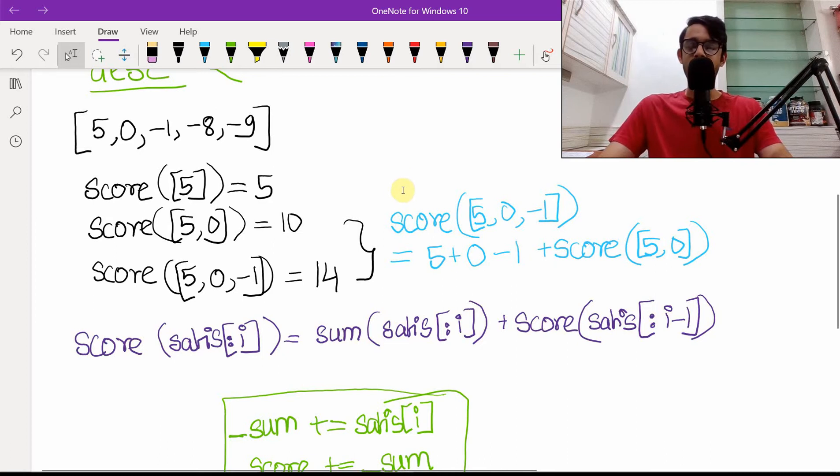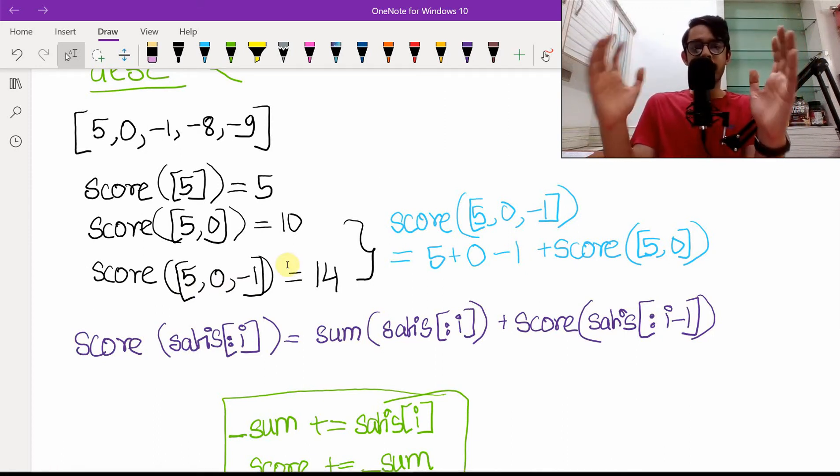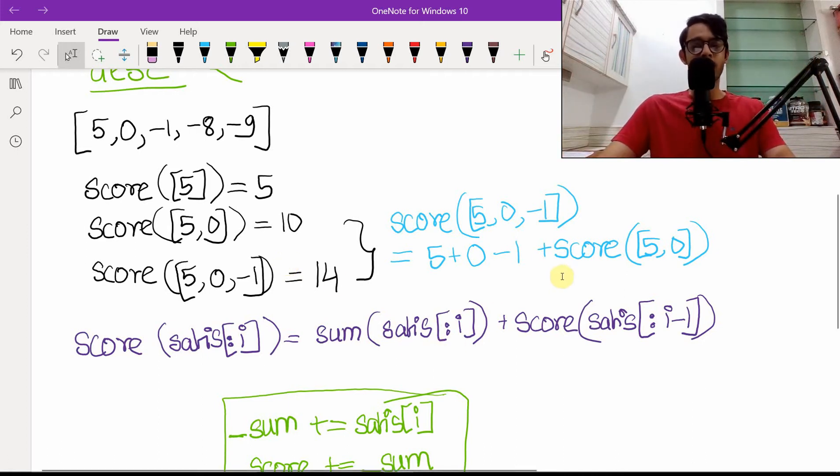Now there is a relationship hidden between them. The score of this array, the score from five, zero till minus one, is the same as the score of five, zero plus all of these three written separately. So the score of five, zero, minus one is fourteen, and you can confirm it by looking at the previous one which is the previous score of ten plus the sum of five plus zero and minus one which is four.